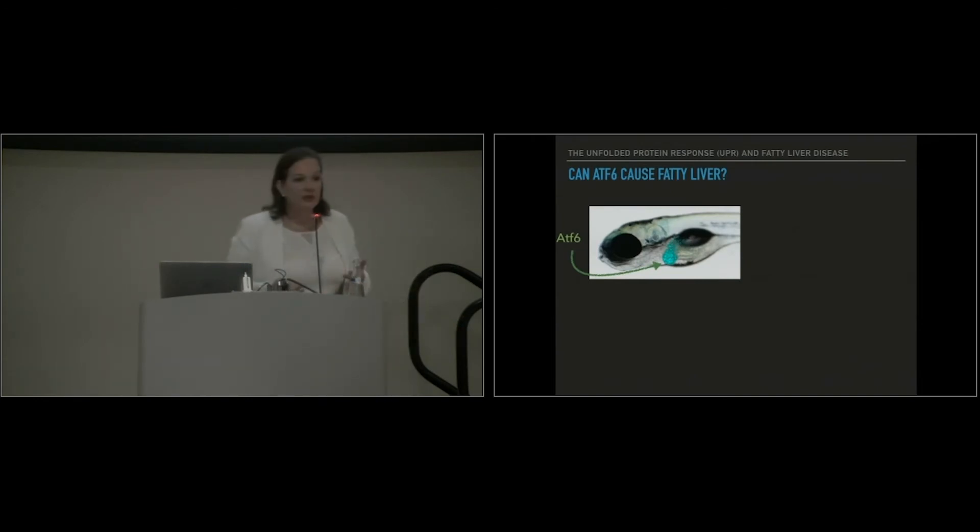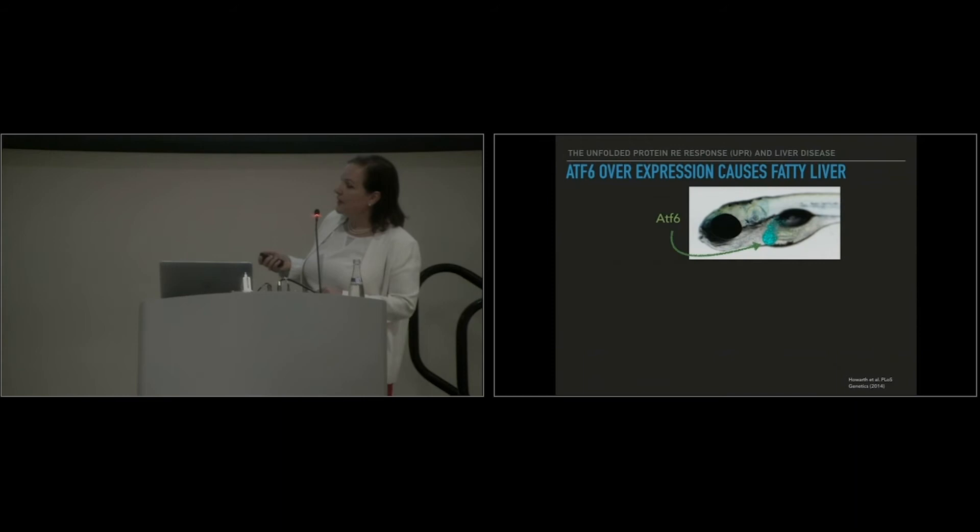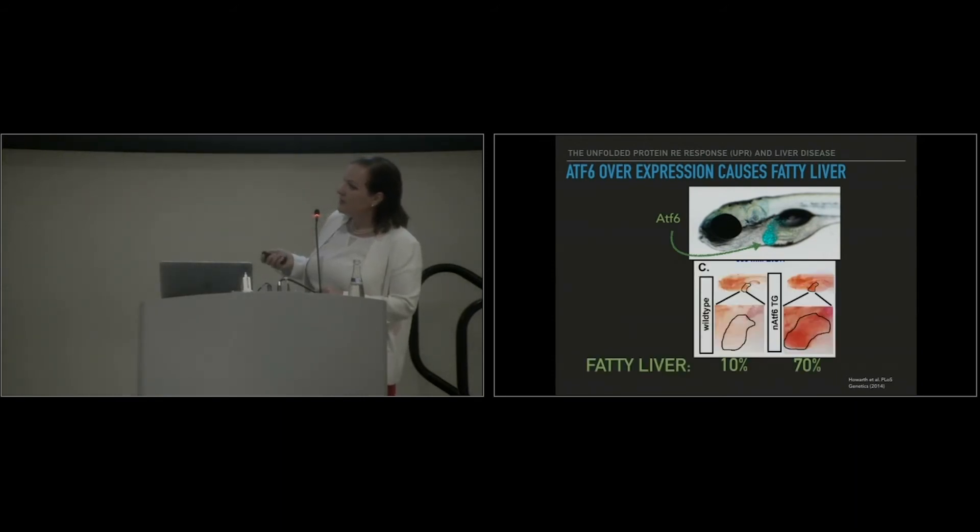So it looks like from these experiments, ATF6 is required for fatty liver. And so we asked the converse question, what if ATF6 is just there all on its own without any stress? Can it cause fatty liver by itself? So what Deanna, a postdoc in the lab, did is she put ATF6 into the liver cells and then measured liver fat by our favorite assay of oil red O. What she sees is indeed over 70% of the fish that have ATF6 in the liver get fatty liver, whereas 10% or less without ATF6 in the liver get fatty liver. So this is on its own in the absence of any stress.